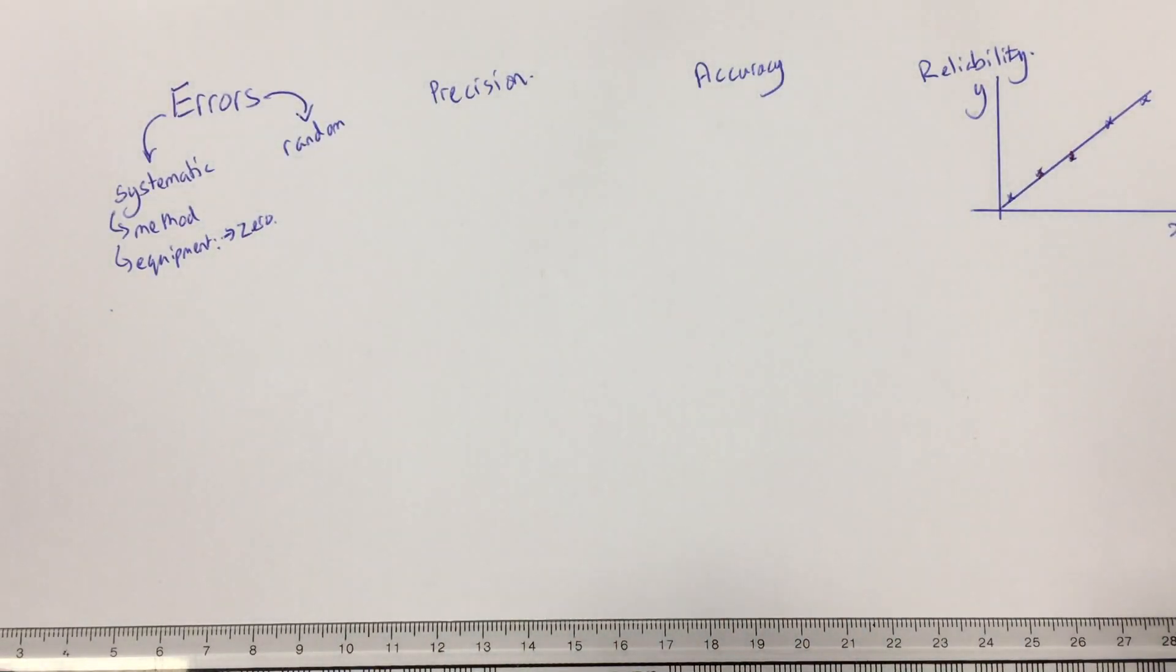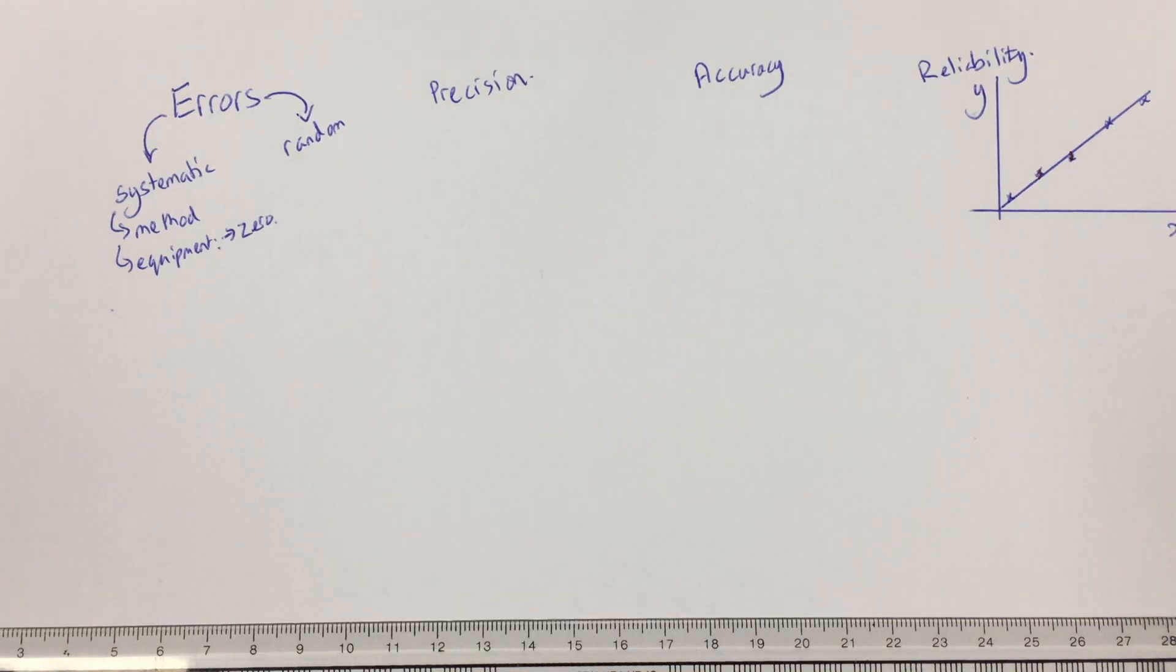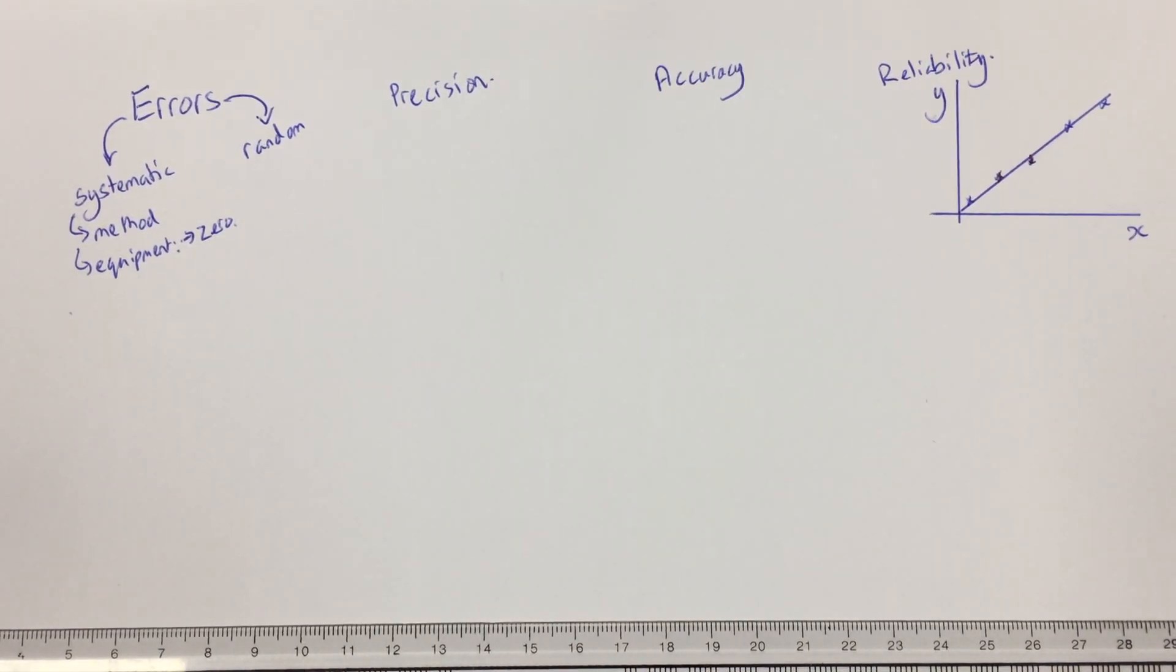So for example, if I've got an ammeter or voltmeter that's calibrated incorrectly, and calibration is a key word that we need to use when we're talking about these words. If it's calibrated incorrectly, so that when it should say zero, it doesn't, maybe it says 0.1 volts, for example, then obviously that error is going to carry through into every reading that I then take for the rest of my experiment. So it's important that I calibrate my equipment accurately.